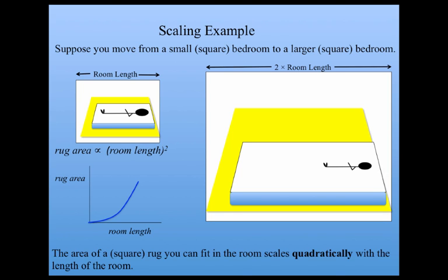Here's what the plot looks like for quadratic scaling. You can see that as the room length is increased, the rug area goes up much faster than in the linear scaling case.